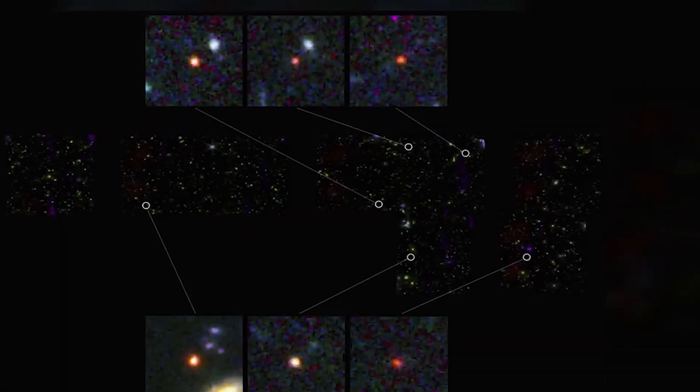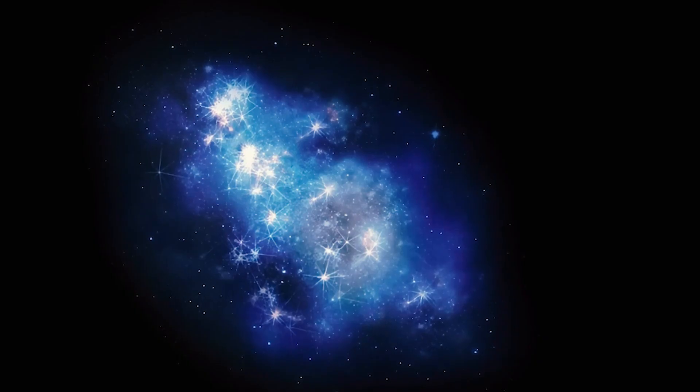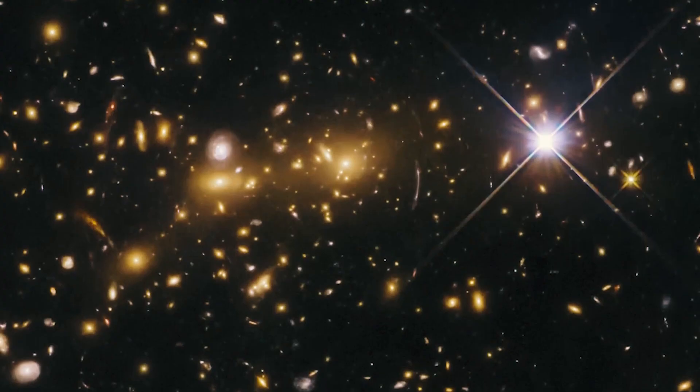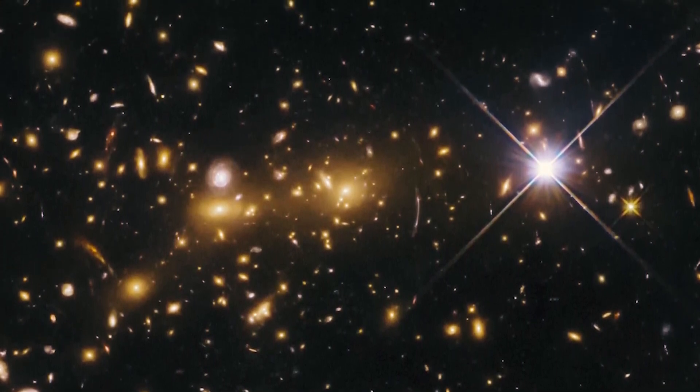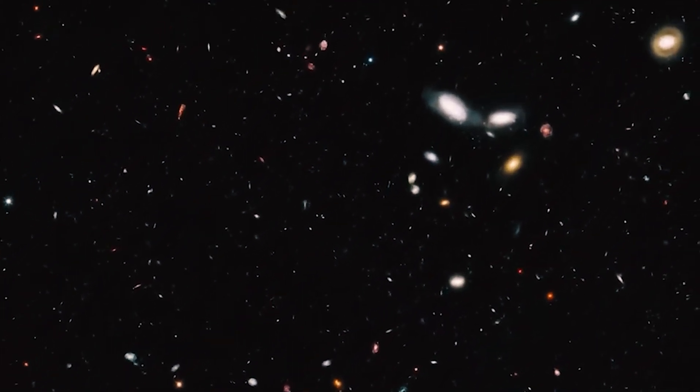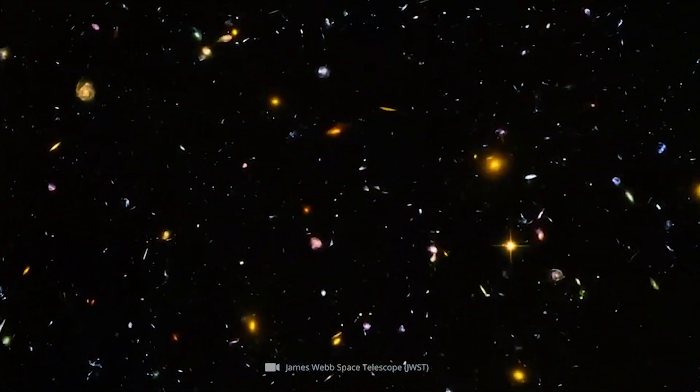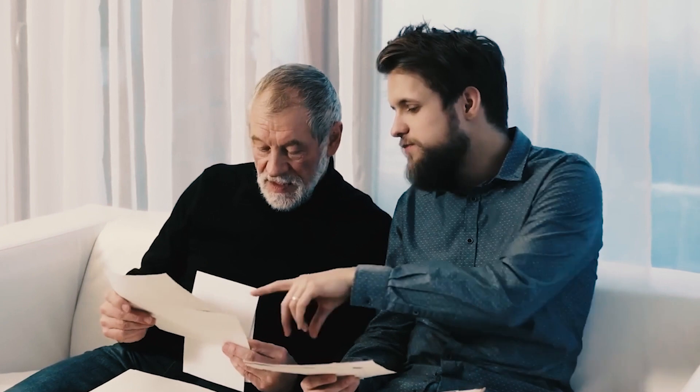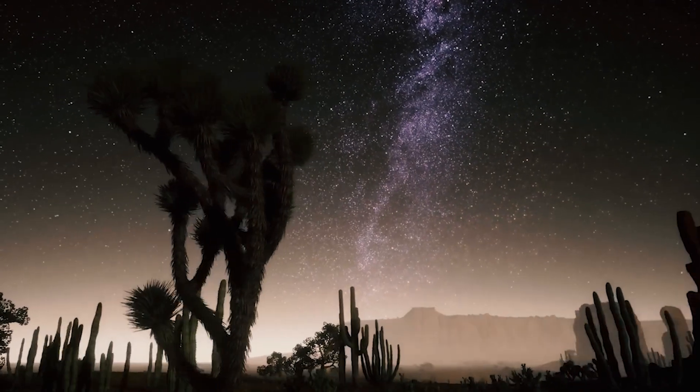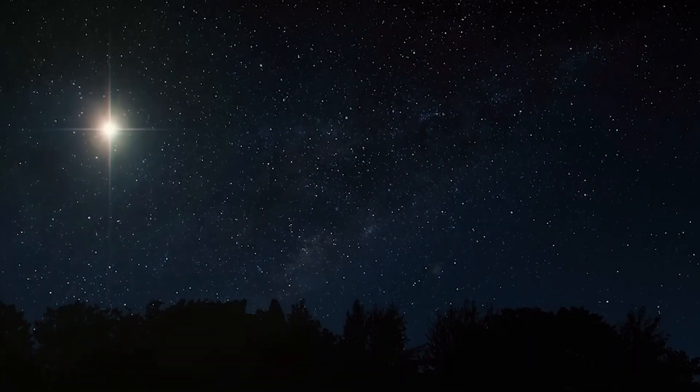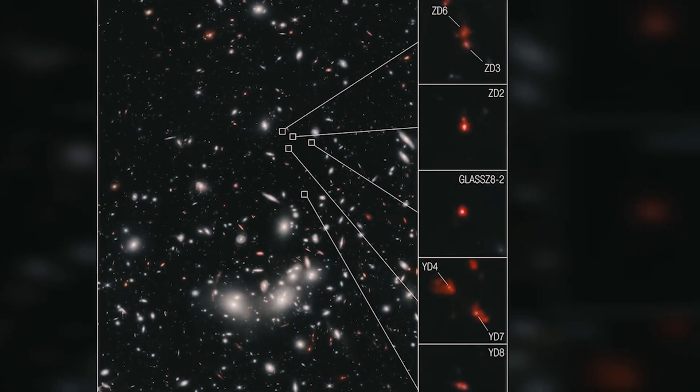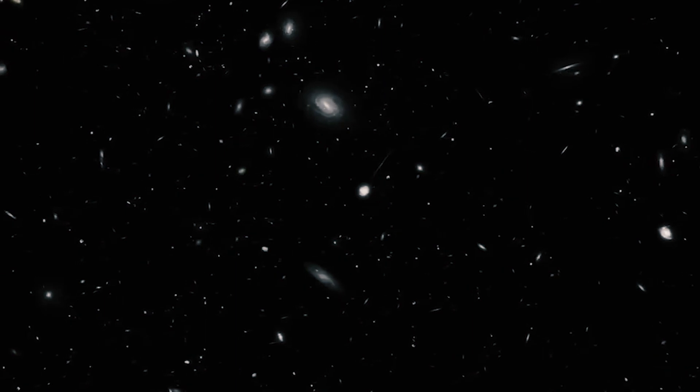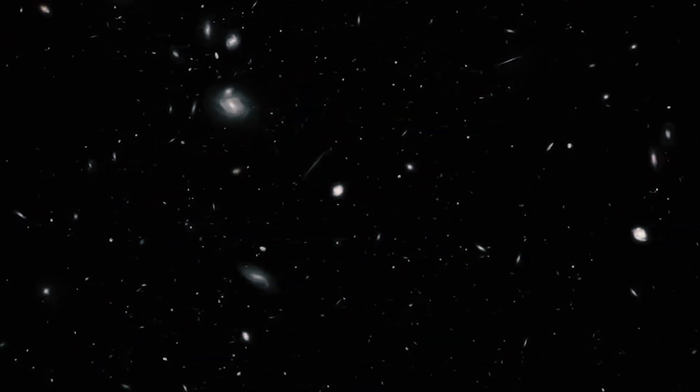The ripples caused by the discovery of the six perplexing galaxies had barely settled when NASA's announcement once again sent shockwaves through the conservative corners of the natural sciences. This time, a galaxy cluster with seven galaxies was identified, sporting a redshift of 7.9, indicating that this cluster existed a mere 650 million years after the Big Bang. Galaxy clusters are collections of individual galaxies, and the fact that they formed so early suggests that the universe had already matured far more rapidly than previously thought during its supposed infancy.